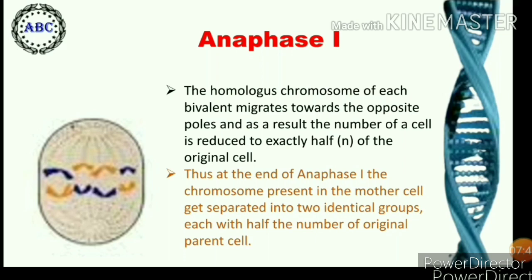During anaphase first, the homologous chromosomes in each bivalent move towards the opposite poles, and as a result, the number of chromosomes at each of the two poles of a cell is reduced to exactly half — that is, a haploid number from the diploid chromosome number of the parent cell. Thus, at the end of anaphase first, the chromosomes present in the mother cell get separated into two identical groups, each with half the number of the original cell.